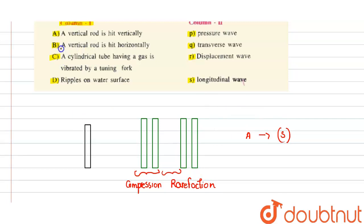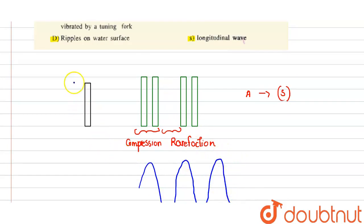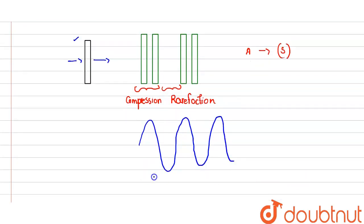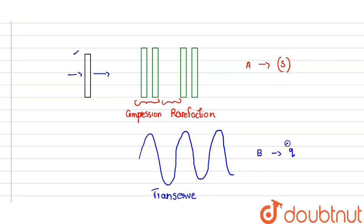In the second one, the vertical rod is hit horizontally. If the vertical rod is hit horizontally, the waves travel in the form of transverse waves. When it is hit along the length, it produces longitudinal waves; when hit along the horizontal line, the waves formed are transverse waves. So, option B corresponds to transverse wave, which is option Q.